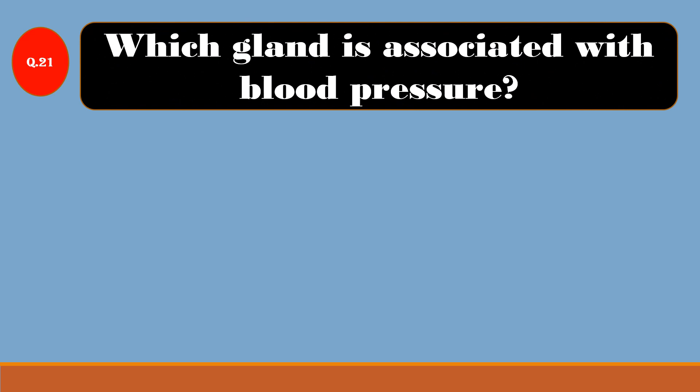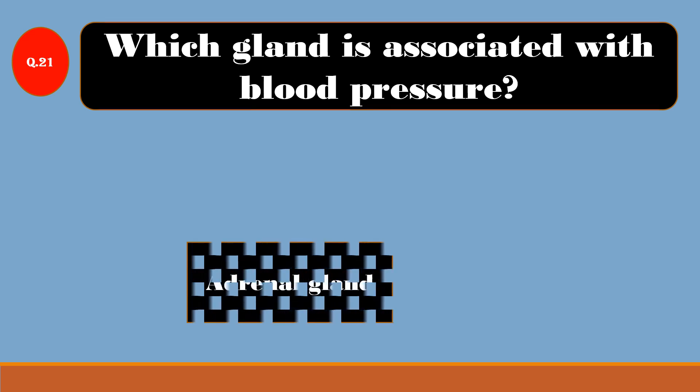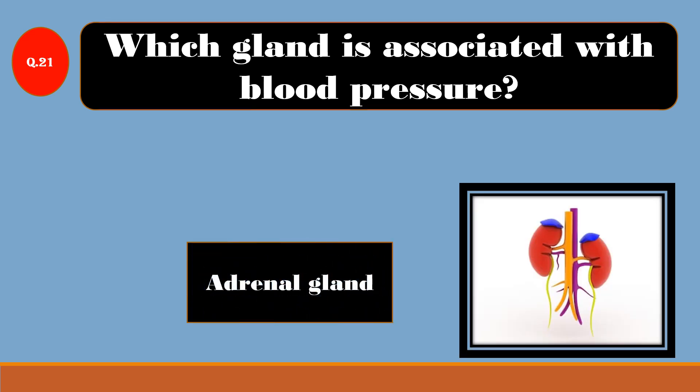Question No. 21: Which gland is associated with blood pressure? Answer is Adrenal gland.